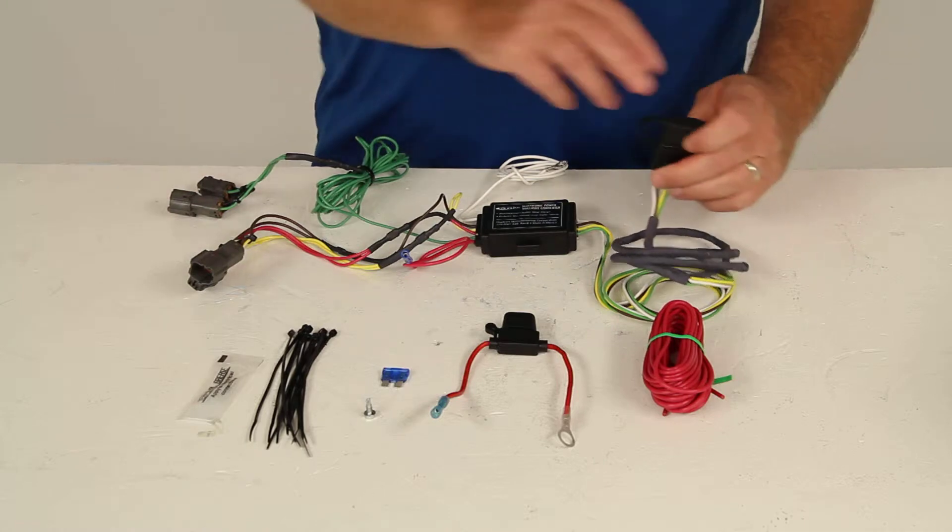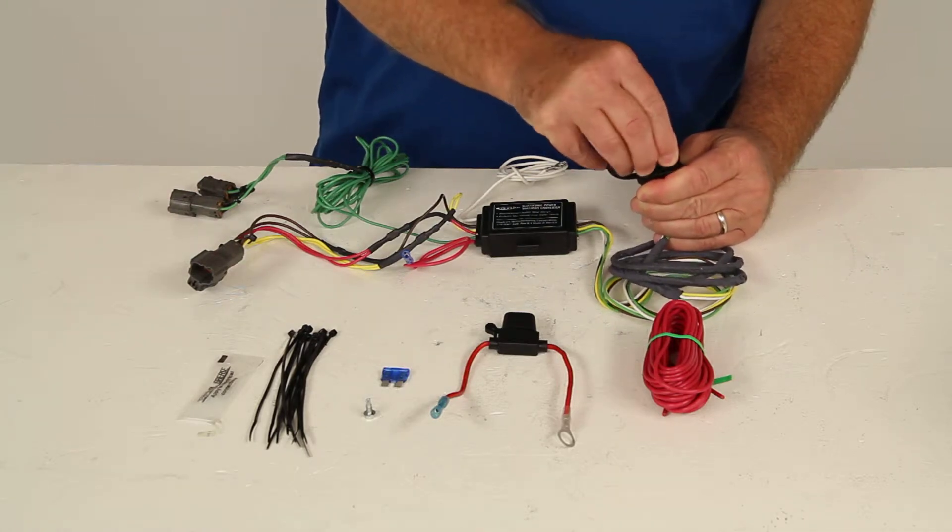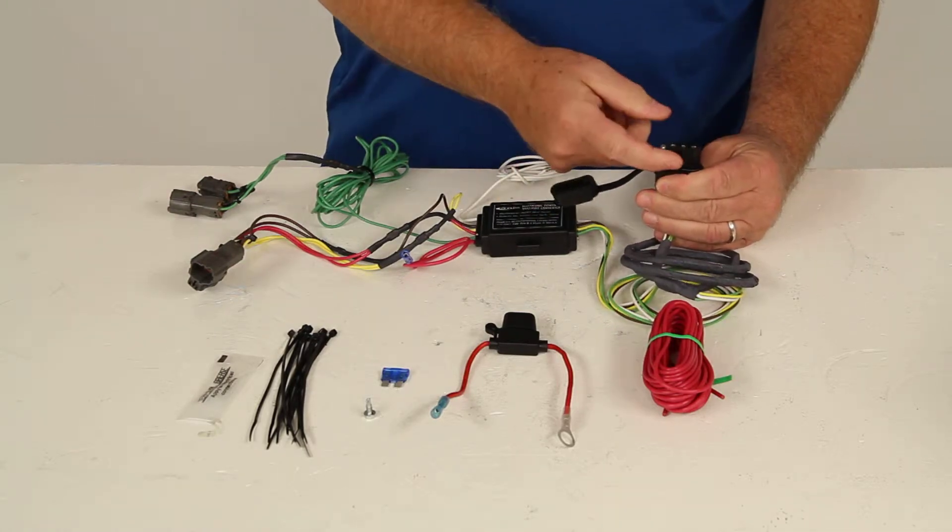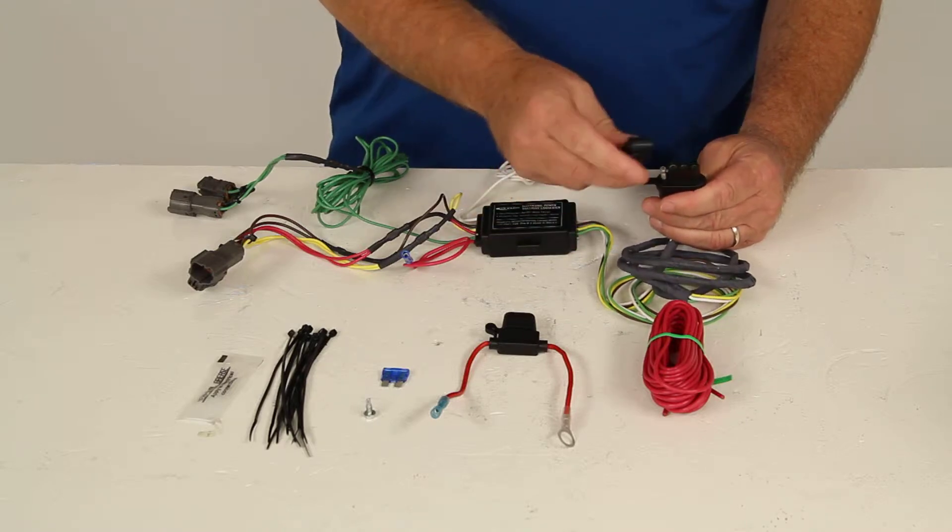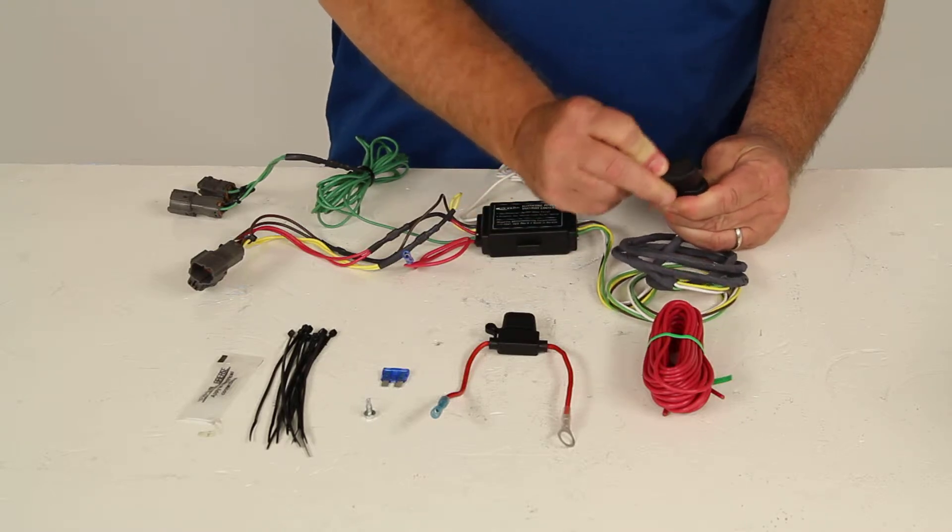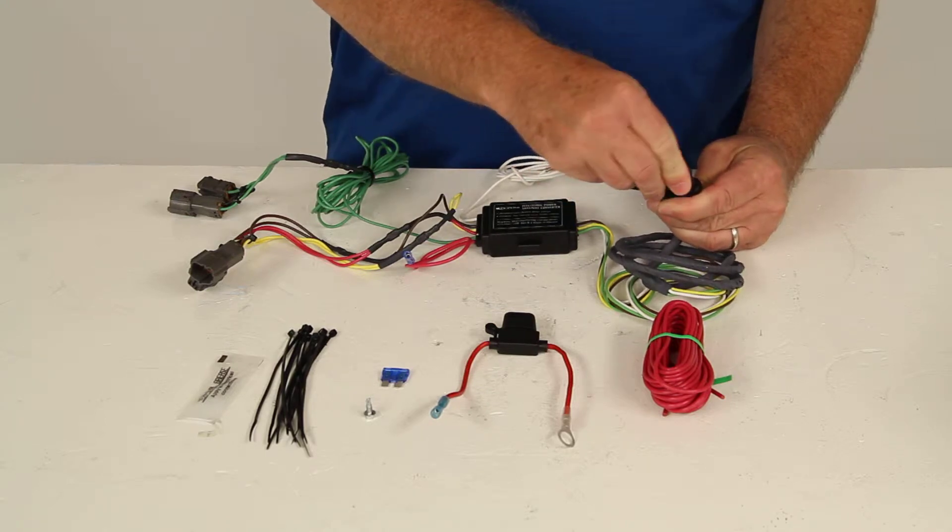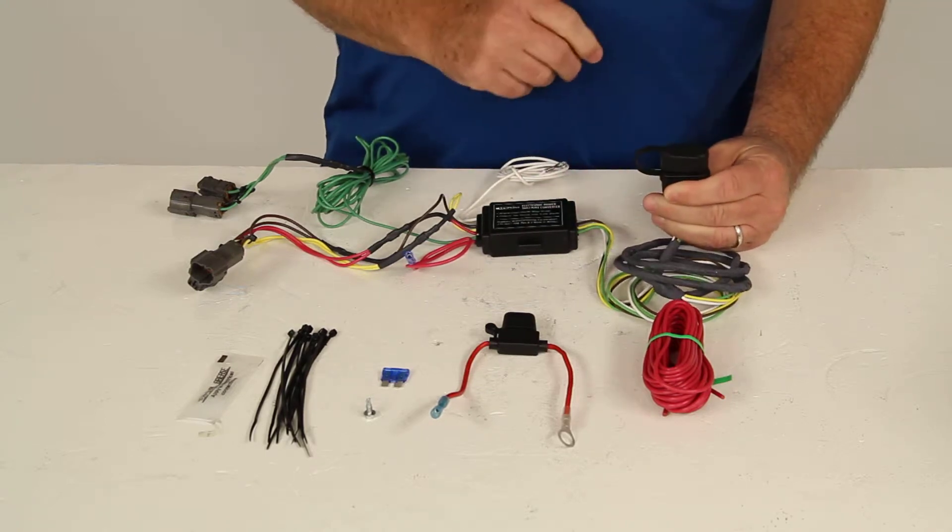Now the four way or the four pole connector right here, let me take the dust cap off and you can see it has the nice corrosion resistant terminals. When you're not plugged into anything you just put your dust cap back on to protect it, just like that.